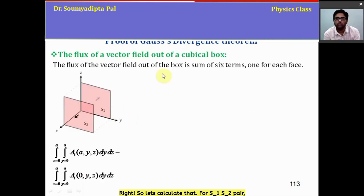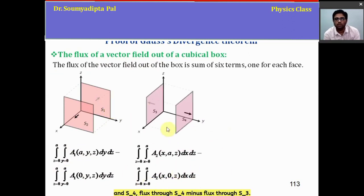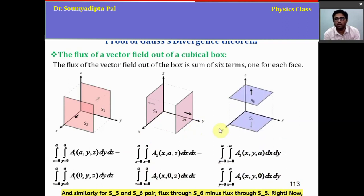For S1, S2 pair, the flux will be flux through S2 minus flux through S1. Then for S3 and S4, flux through S4 minus flux through S3. And similarly for S5 and S6 pair, flux through S6 minus flux through S5.